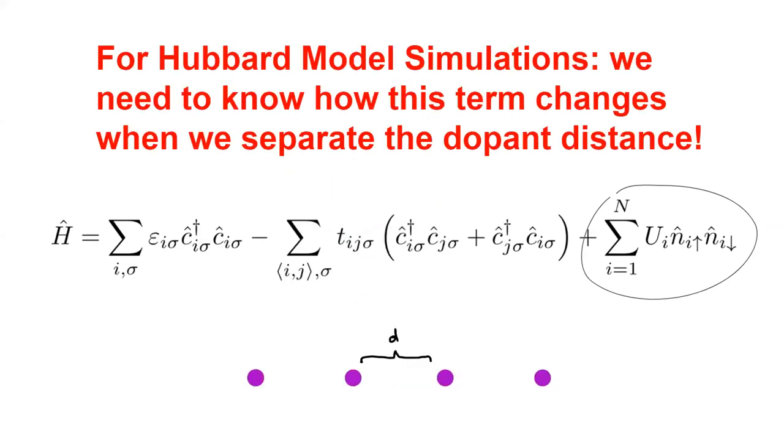In order to efficiently model the Hubbard model with our dopant array system, we want to understand how the Coulomb repulsion term changes with various important parameters of our dopant array. One of them is the distance between the dopants.